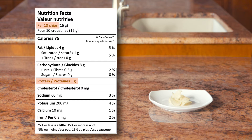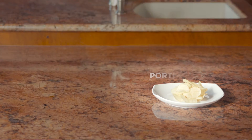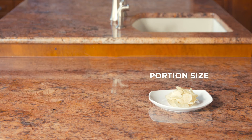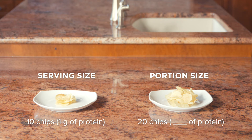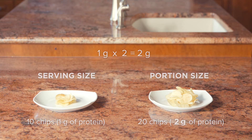By having another serving of 10 chips, your portion size has doubled to 20 chips. To figure out the total amount of protein you've had, simply double the grams of protein listed in the table. 1 gram of protein times 2 gives you a total of 2 grams of protein for 20 chips. That's all you have to do.